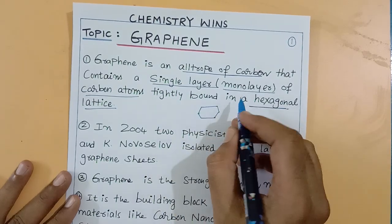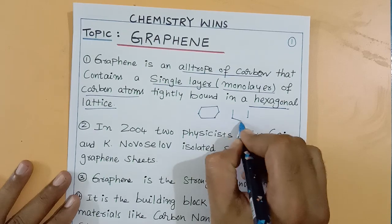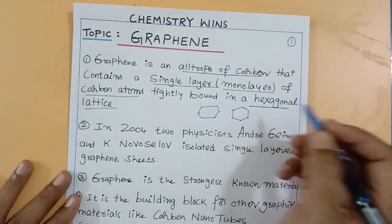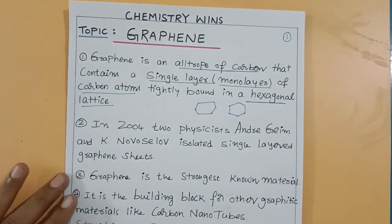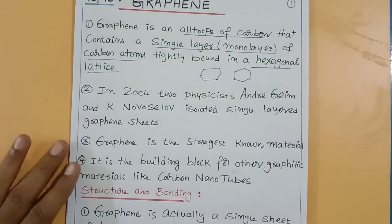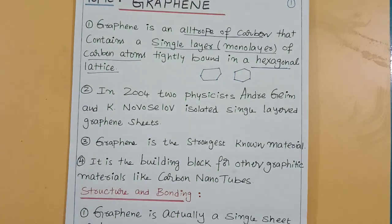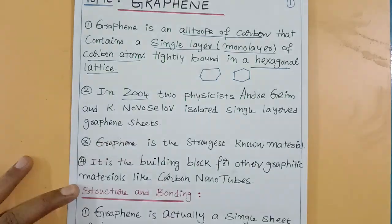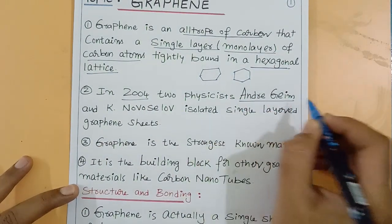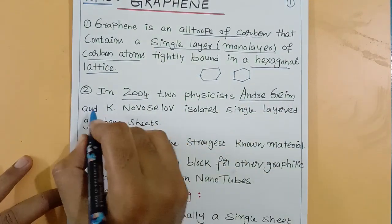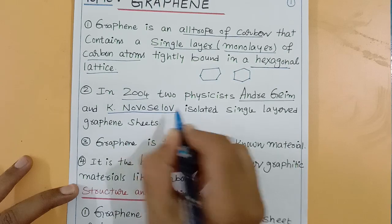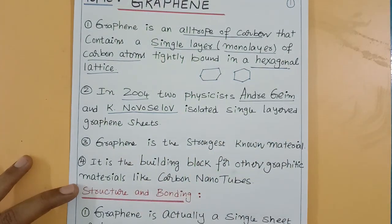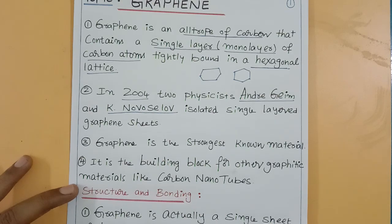Graphene was first isolated by two scientists in the year 2004: Andrey Geim and K. Novoselov. These two scientists successfully isolated graphene sheets.